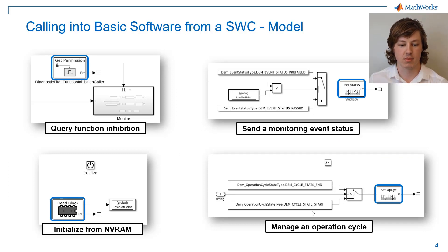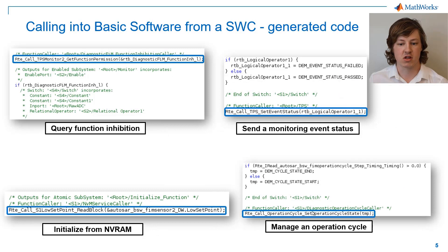Here we can see a Function Inhibition Query being used to enable a subsystem. A comparison to a baseline driving an event monitor. A read from entry RAM writing to a datastore within an initialised subsystem. And an operation cycle, which is being driven by a pulse signal. This modelling flexibility shows through in the generated code — we can see here these same calls to BASIC software appearing seamlessly within the code.